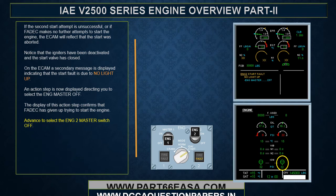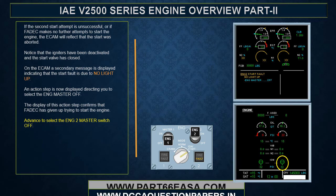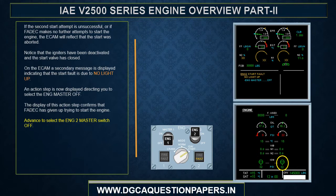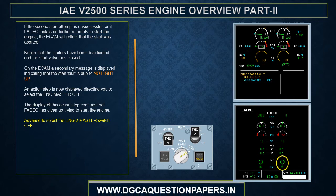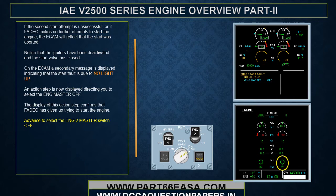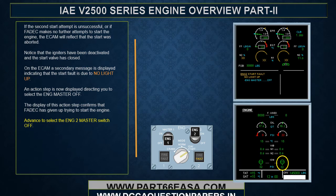If the second start attempt is unsuccessful or FADEC makes no further attempts, the ECAM will reflect that the start was aborted. The igniters have been deactivated and the start valve has closed. A secondary ECAM message is displayed indicating the start fault is due to no light up. An action step is now displayed directing you to select the engine master off, confirming that FADEC has given up trying to start the engine.